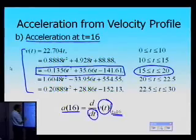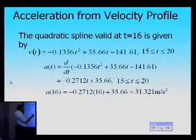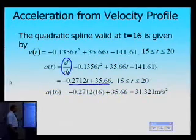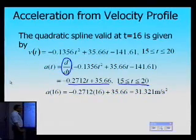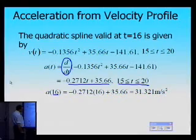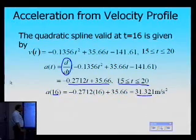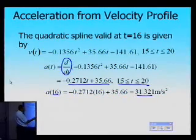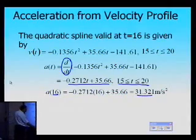I take the spline valid between 15 and 20, substitute it into the derivative equation, and this is what I get as the derivative — the acceleration expression. This acceleration is valid between 15 and 20, so I simply substitute t equal to 16 and I get my acceleration to be 31.32 meters per second squared. If asked to find the acceleration at any other point outside 15 to 20, I'd have to choose the proper quadratic spline for that interval.